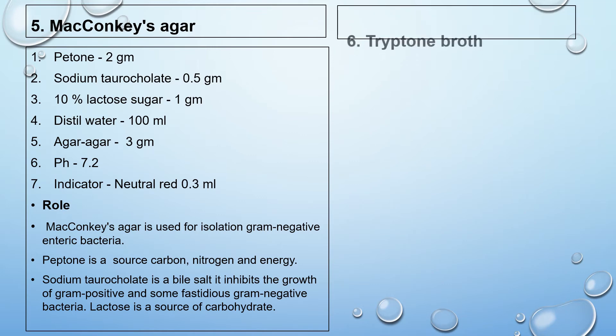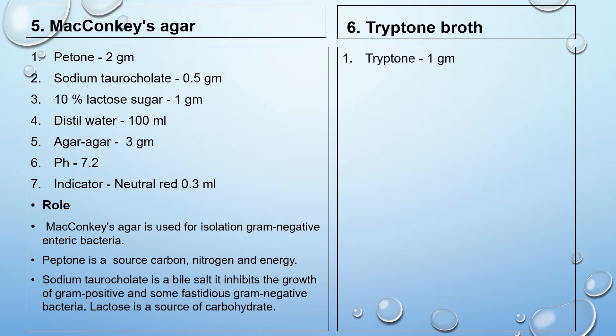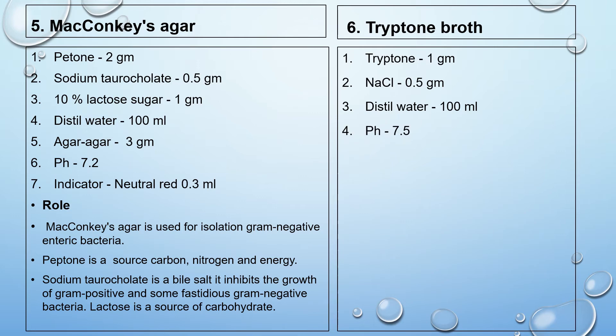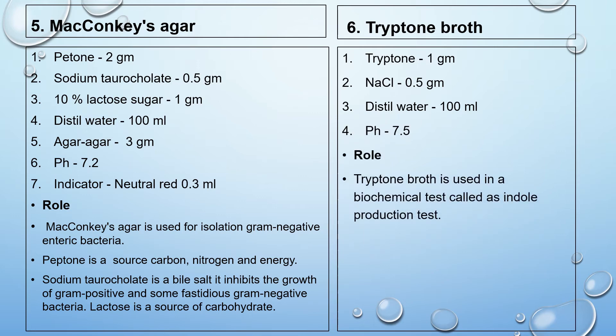The sixth one is tryptone broth. Composition: tryptone 1 gram, NaCl 0.5 gram, distilled water 100 ml, pH 7.5. Tryptone broth is used in a biochemical test called the indole production test.